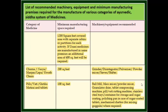One: Churna, Nasya, Kwath, Lepa, etc. Space required: 200 square feet. Equipment: grinder or disintegrator.